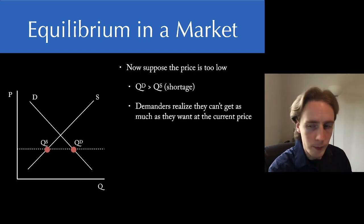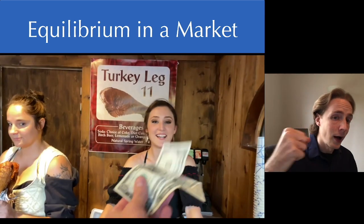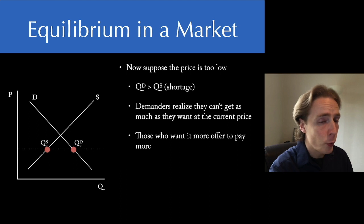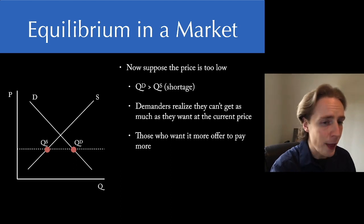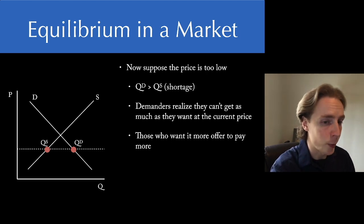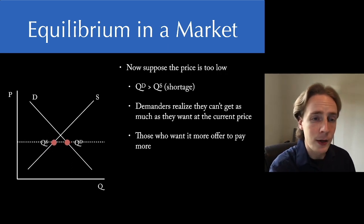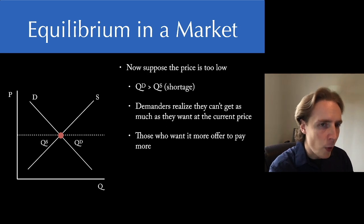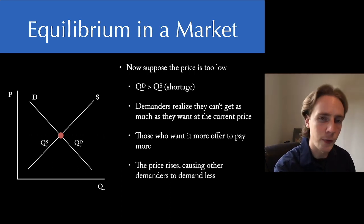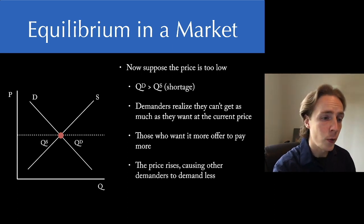What do you do in this situation? You run up and say, wait, I'll pay $5. Why are you willing to do this? Because if your willingness to pay is higher than $5, you'd rather get it at $5 than run the risk of not getting it at $3. So what does this do when you bid up the price? Quantity demanded falls — this guy who was maybe kind of interested at $3 is now out of the market. At $5 he says that's too rich for me, so people who would have demanded it at $3 now don't.